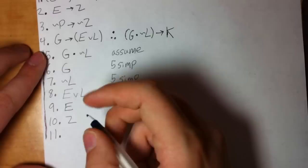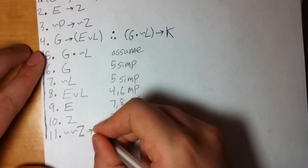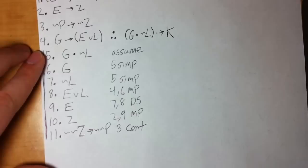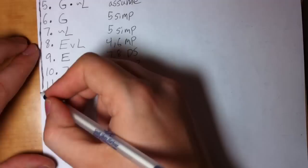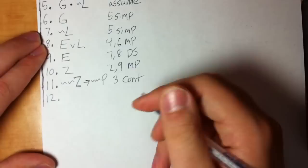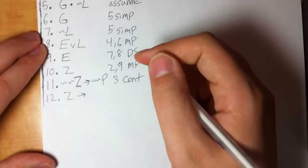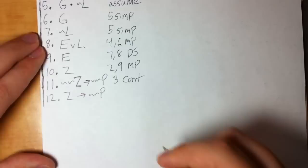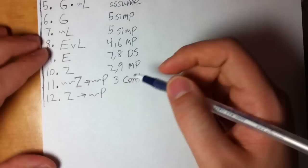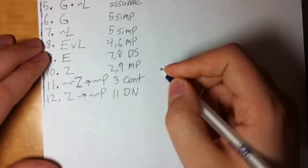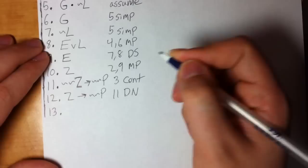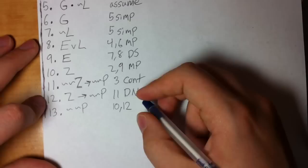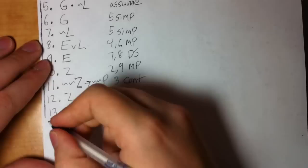I flip around line three using contraposition. Now I'm really close to using modus ponens on that line, but I need to use double negation to turn 'not not Z' into Z. Remember, you can only use double negation on one section at a time — don't try to combine steps. So that's line eleven, DN. Now I can get tilde tilde P by itself from lines ten and twelve, MP.